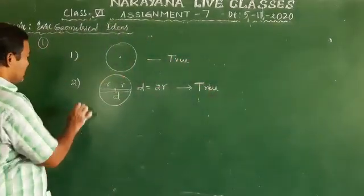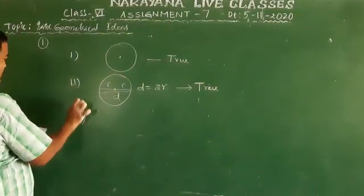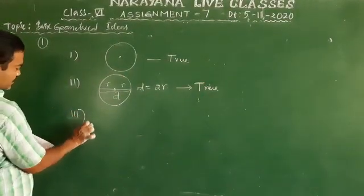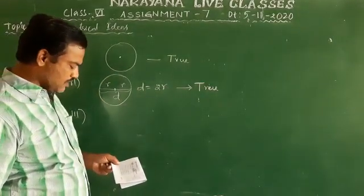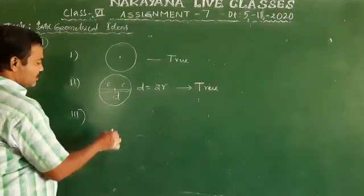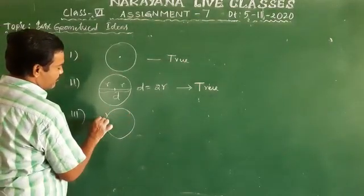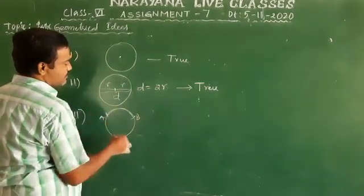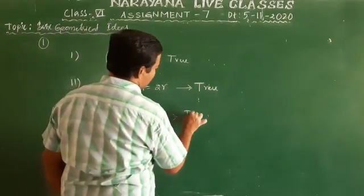Third one — an arc is a part of a circle. Yes, arc is a part of a circle. AD is an arc, and this is part of a circle. So it is also true.